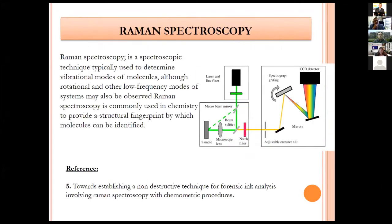Raman spectroscopy is a spectroscopic technique typically used to determine vibration modes of molecules, though rotational and other low frequency modes may also be observed. Raman spectroscopy is commonly used in chemistry to provide a structural fingerprint by which molecules are identified. It has been widely used towards establishing a non-destructive technique for forensic ink analysis, involving Raman spectroscopy with chemometric procedures.